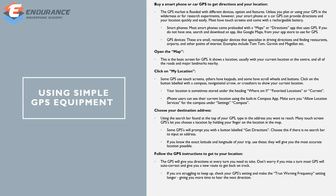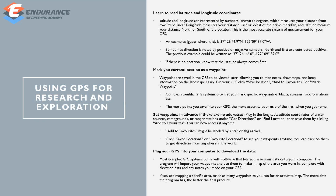Using GPS on a simple smartphone: if you know a location, you can use a map to navigate. We can use GPS to find a destination location. You can use GPS for search and exploration. You can obtain latitude and longitude coordinates, mark your current location, add favorites, save collection versions, plug in GPS, view location history, and download it.